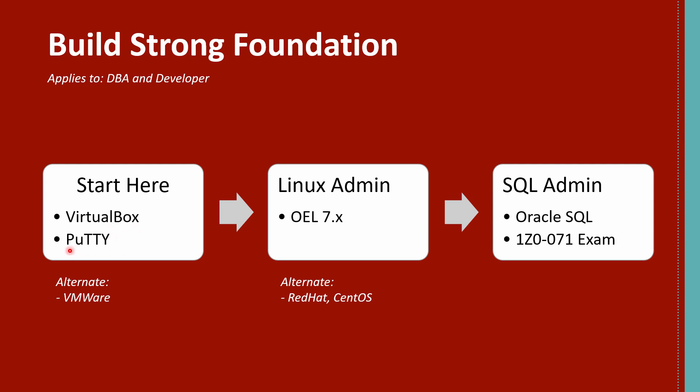Once you know how to use VirtualBox and how to install Linux on it, you need to understand SSH tools. One of the widely used SSH tools is PuTTY, which will allow you to remotely connect to the Linux machine you created in VirtualBox. While learning PuTTY, there are other small softwares you also need to know, like WinSCP and Xming — don't worry, these are pretty small and can be learned in a matter of minutes. Once you know how to create a Linux virtual machine and use SSH tools like PuTTY, you then need to move into Linux administration.